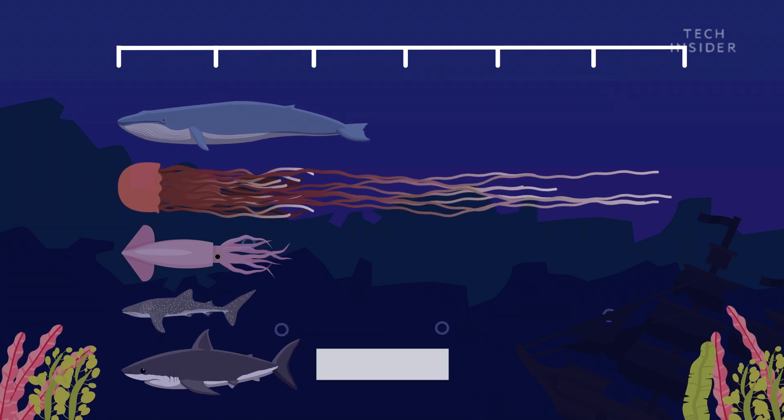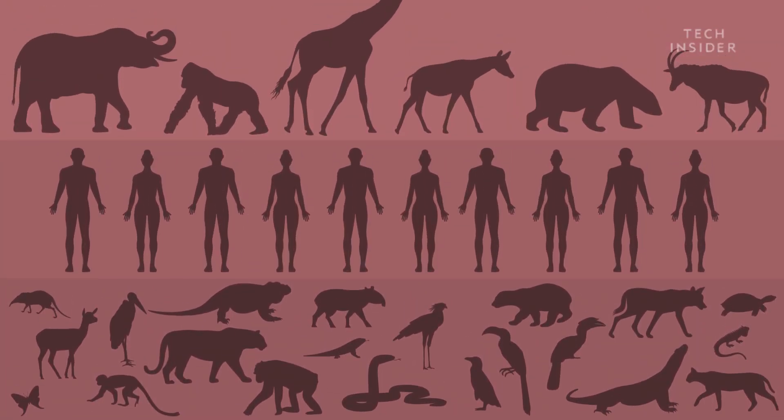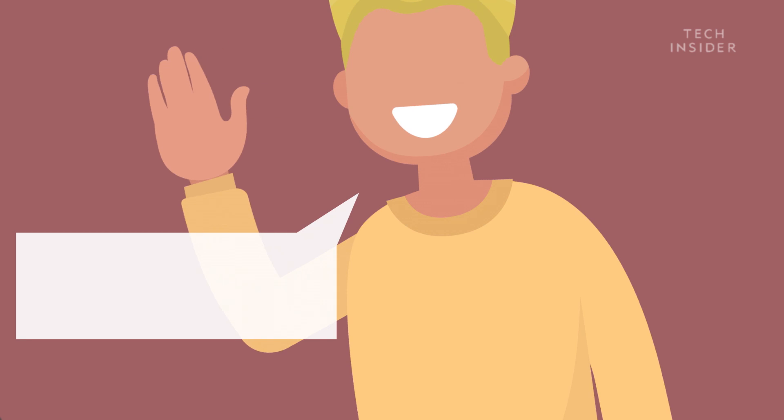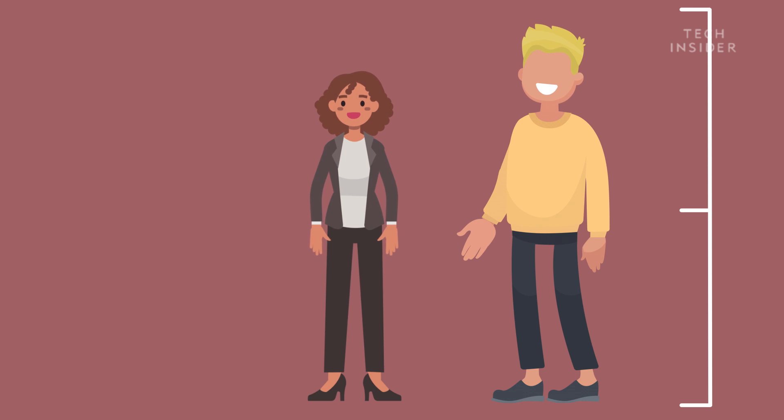So where do humans fit into all this? Somewhere near the top, actually. Humans are bigger than 87.6% of mammals on Earth. And the average Dutchman is the tallest of them all. So there's no reason to ever feel small again, especially if you're from the Netherlands.